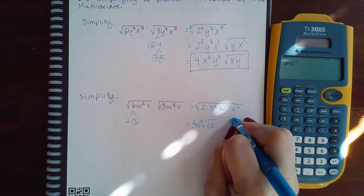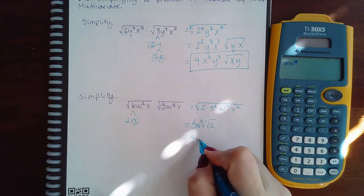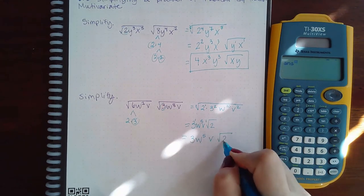If I clean that up I can write 3w to the fifth v and then the square root of 2.